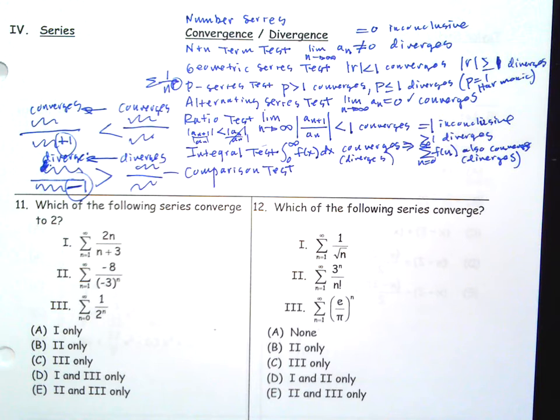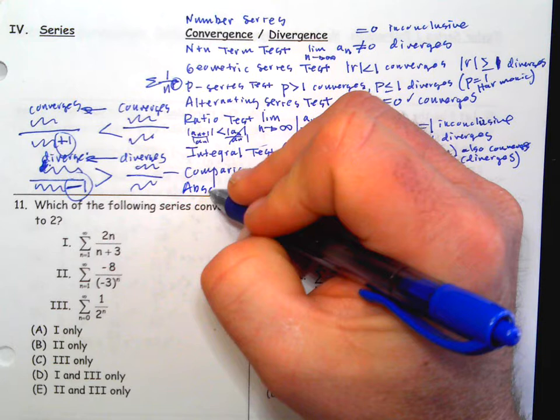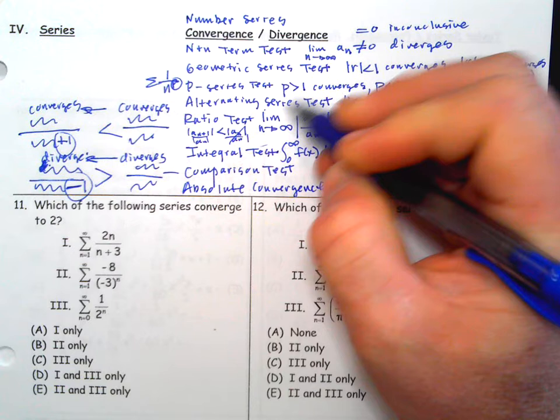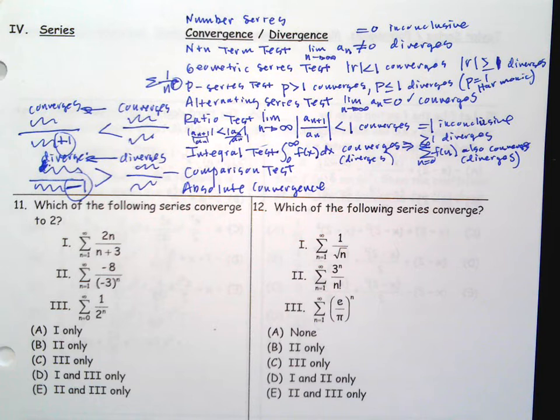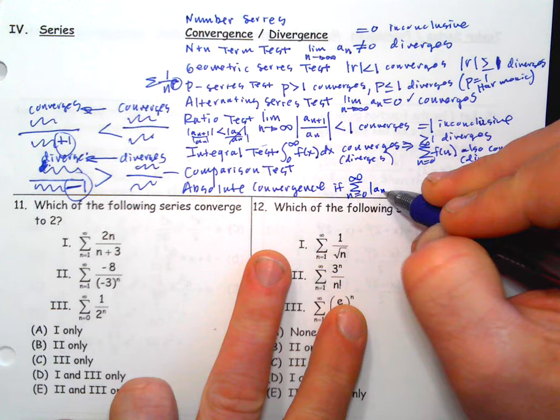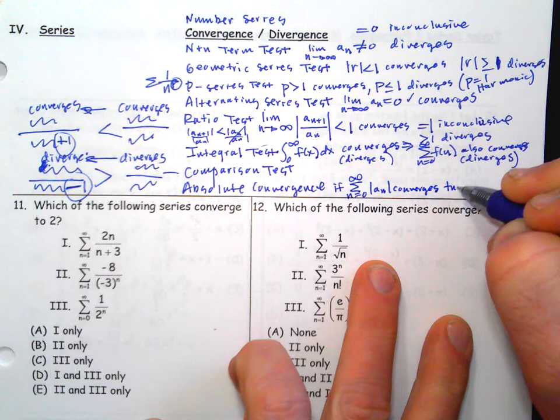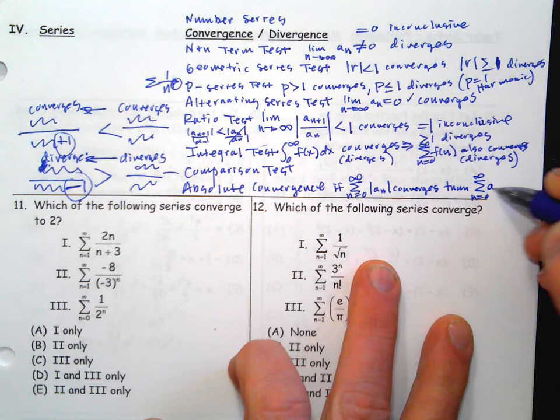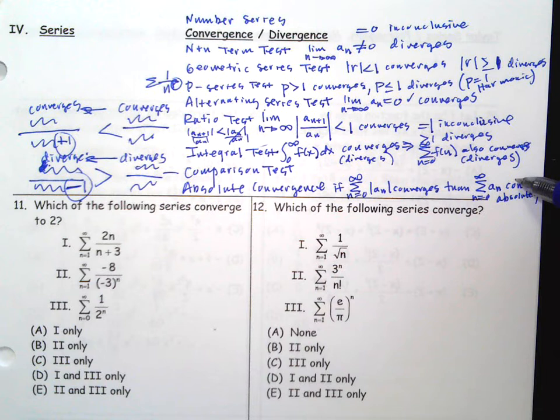There's also absolute convergence. If the series of absolute values of a(n) converges — forcing all negative terms to be positive — then the original series with positive and negative terms definitely converges, and we say it converges absolutely. If the all-positive version doesn't converge, that's inconclusive. But if the original still converges without that, we'd say it converges conditionally.